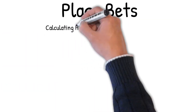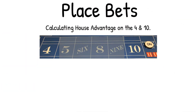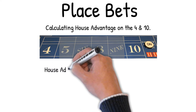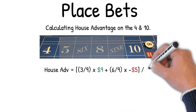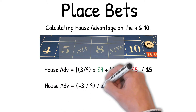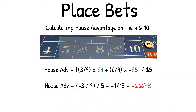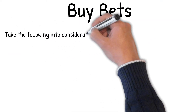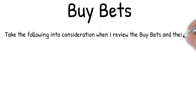Calculating house advantage on the four and ten. House advantage equals: 3/9 × $9 + 6/9 × (−$5), over $5. This equals (−3/9) / 5, which equals −1/15, which equals −6.667% house advantage.